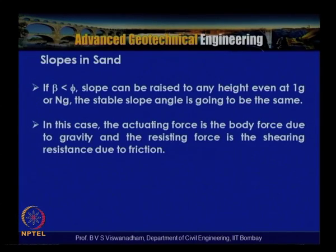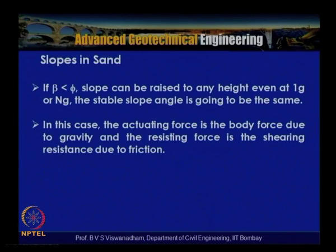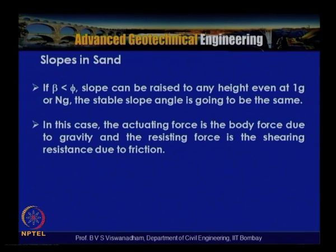With slopes in sand we said that if beta is less than phi, the slope can be raised to any height even at 1g or ng, and the stable slope angle will be the same. The actuating force is the body force due to gravity and the resisting force is the shearing resistance due to friction. Now, with the introduction from slopes in clay under undrained analysis from Taylor's stability chart, let us look at how it can be analyzed.